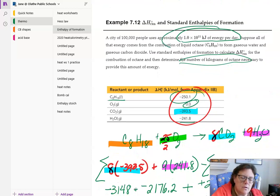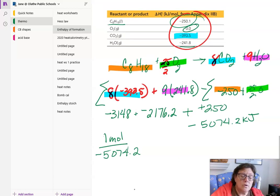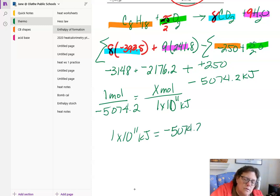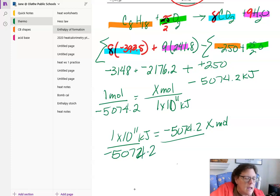But the energy up here is 1 times 10 to the 11th, but we don't know the number of moles of that. So we're going to do a cross multiplication. 1 times 10 to the 11th kilojoules equals negative 5074.2 times moles. Divide both sides by negative 5074.2 and we get, let's see, 1E11 divided by 5074.2, we get 19707540 moles.